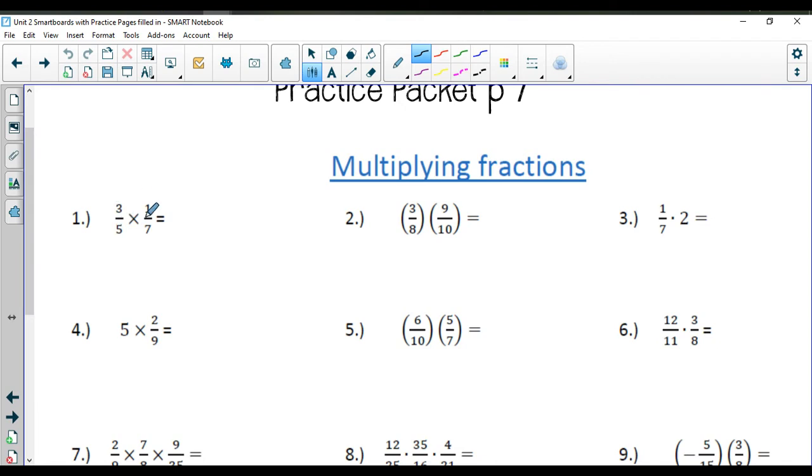Remember, you can simplify up and down and also on the diagonals. In this first one, there's nothing to simplify, so you would just multiply straight across, so you're going to get 3 over 35.